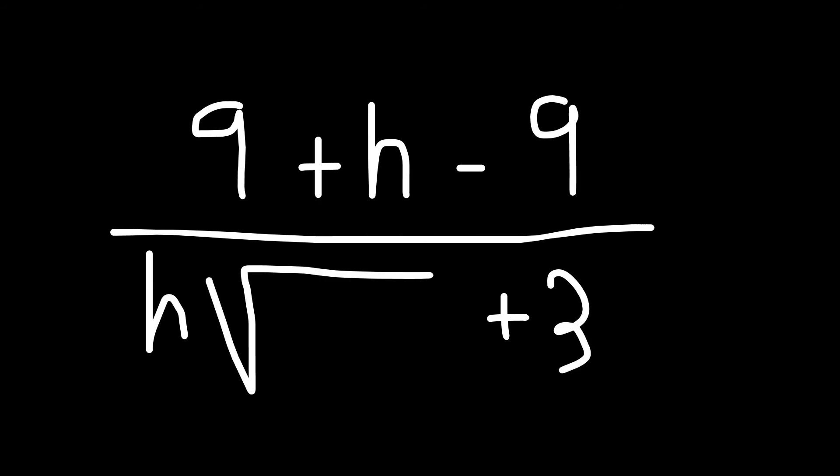So what's left then is 9 plus h minus 9, and then you have the plus 3 and the h multiplying the root of 9 plus h.